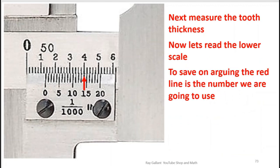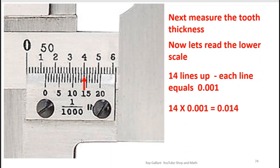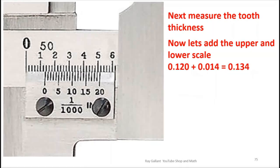Now let's read the lower scale. So to save arguing we're going to say that the number, I guess we're going to say that's 14 lines up so that's four. Okay so 120 thou plus 14 thou is going to be 134 thou.